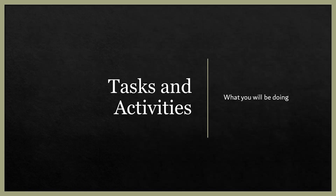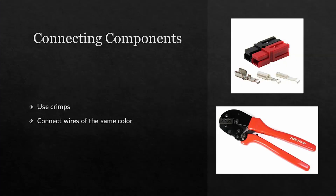Now that we know our safety rules, we can move on to the various tasks and activities that you will be doing if you choose to do electrical within your respective team. The first task is connecting components. Electrical for robotics is very simple and often boiled down to connecting components together. To do this, wires will have crimps at the end of them. Wire needs to be stripped and crimped to attach a connector to them.